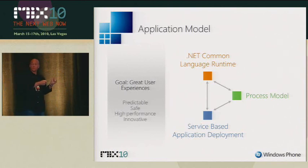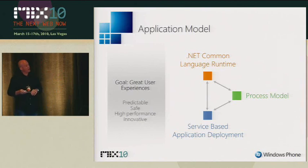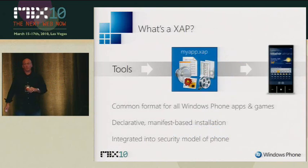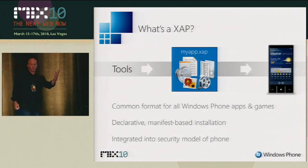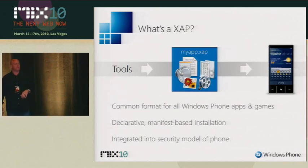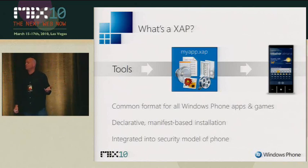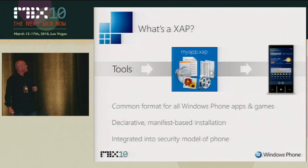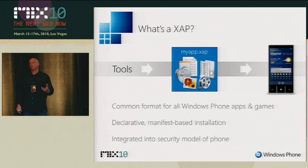Over time we'll tweak and augment this model. We felt it was very important in this release to nail it. The unit of execution for a Windows Phone application is a XAP file. A XAP file is really just a zip file, renamed — the same format already used by Silverlight. This XAP file format is used for both Silverlight and XNA-flavored applications on the phone. It includes all the manifest information needed by the system to install and deploy your app.